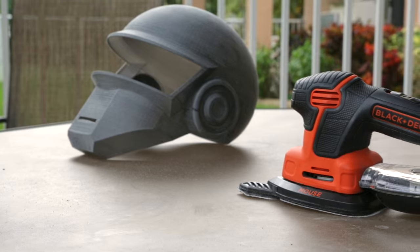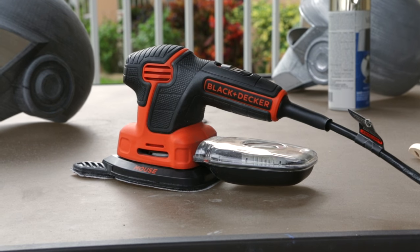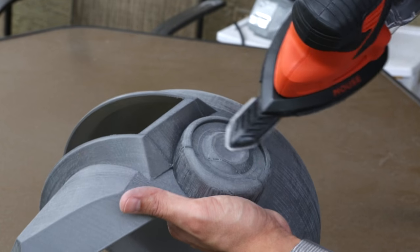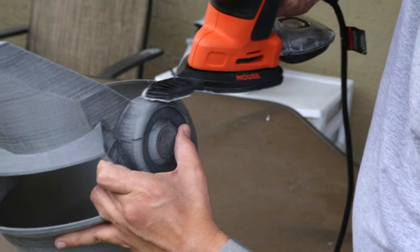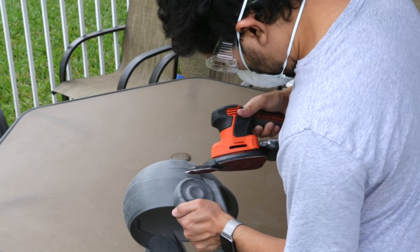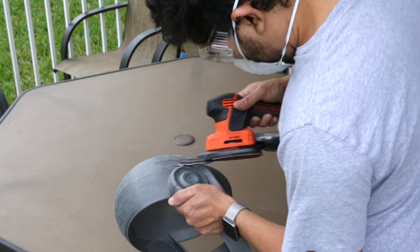To smooth out the 3D printed build lines we're going to use a power sander. This one has a detailed tip which will help us get into those crevices. We'll start off with 120 grit and then move our way up to 220. Now it's going to get a little dusty so be sure to do this in a well-ventilated area and wear a breathing mask and eye protection.